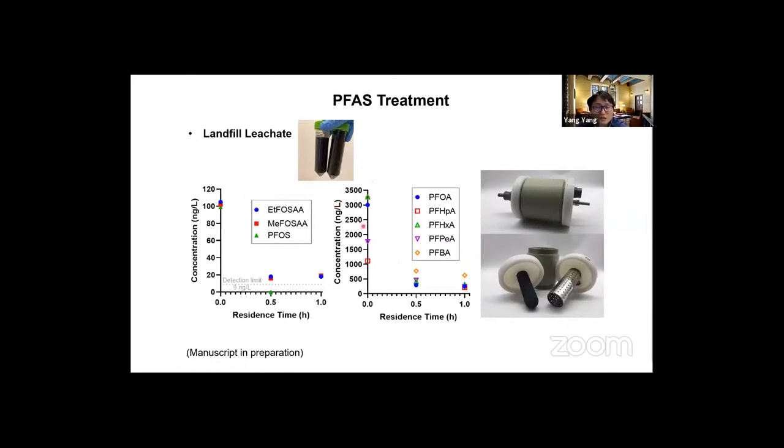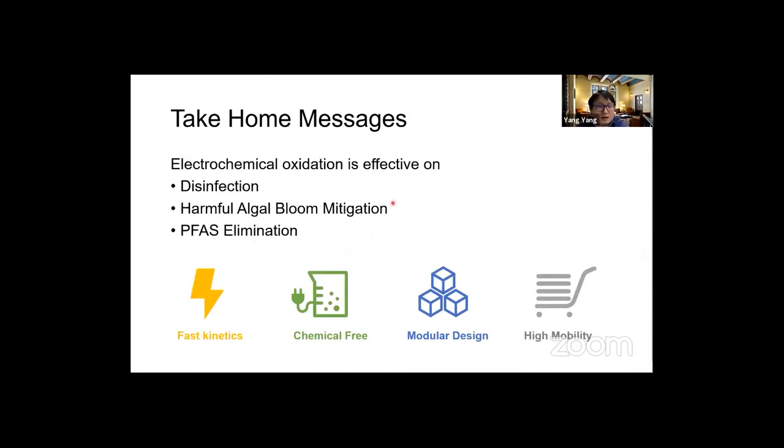We can achieve one log removal of PFOA and PFAS within one hour. Using the hydrogen peroxide assisted electrolysis strategy, we can achieve an overall reduction of PFOA significantly. Very recently we are working on the treatment of landfill leachate, which is another sink of PFAS. We are developing a flow-through reactor for this purpose. We also obtained a lot of promising results. This electrochemical oxidation technology can readily destroy PFAS at various chain lengths and it is also functional for the removal of PFAS precursors.